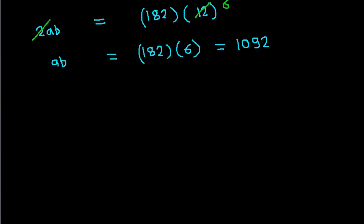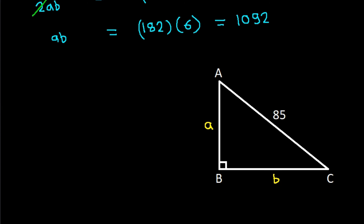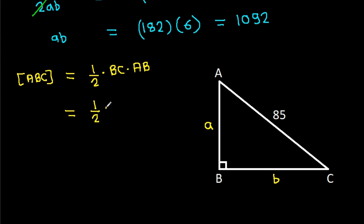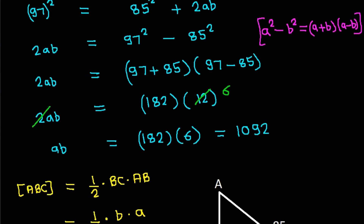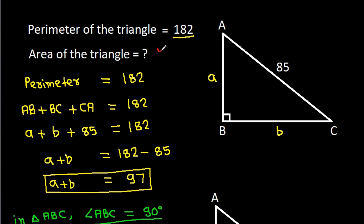Now, the area of triangle ABC equals one half times base BC times height AB, which is one half times B times A, and that is one half times AB. Since AB equals 1092, and 2 times 546 equals 1092, the area is 546.